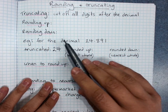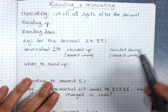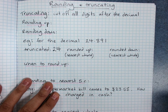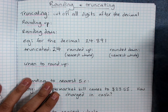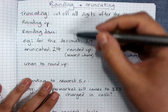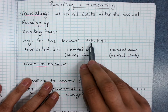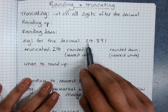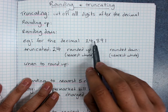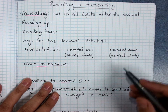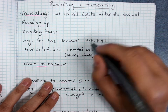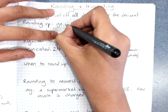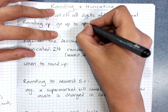Sometimes it makes more sense to round up to the nearest whole number. Remember that we might also call a whole number an integer. So if I rounded 24.891 up to the nearest whole number, 0.891 becomes 25. Rounding up means you go up to the next whole number.